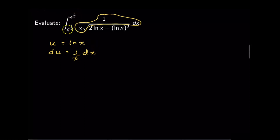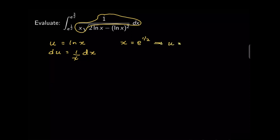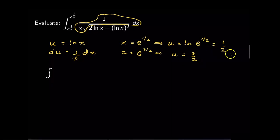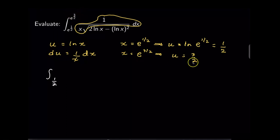Since this is a definite integral, when I use substitution I will convert the limits in terms of u as well. The original limits are x equals e to the one-half and x equals e to the three-halves. When x equals e to the one-half, u equals ln of e to the one-half, which is one-half. When x equals e to the three-halves, u equals three-halves. So the new limits are u equals one-half to u equals three-halves.